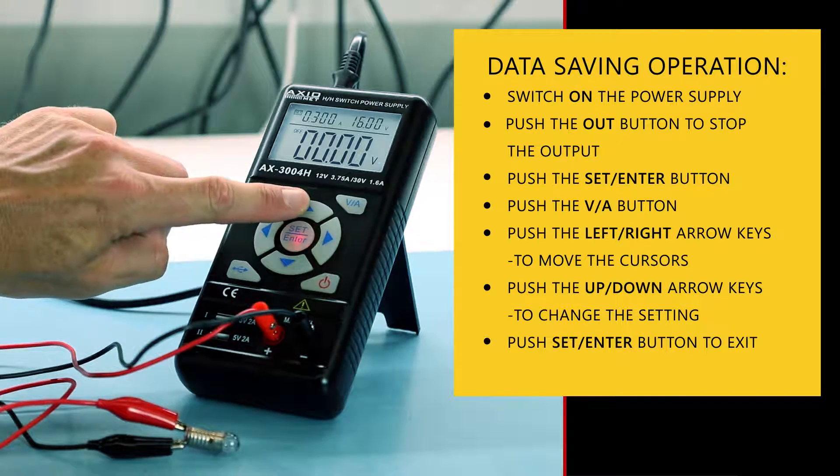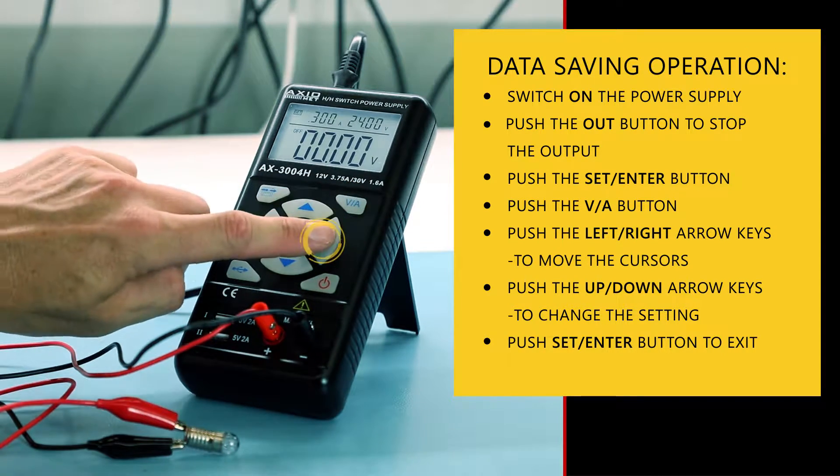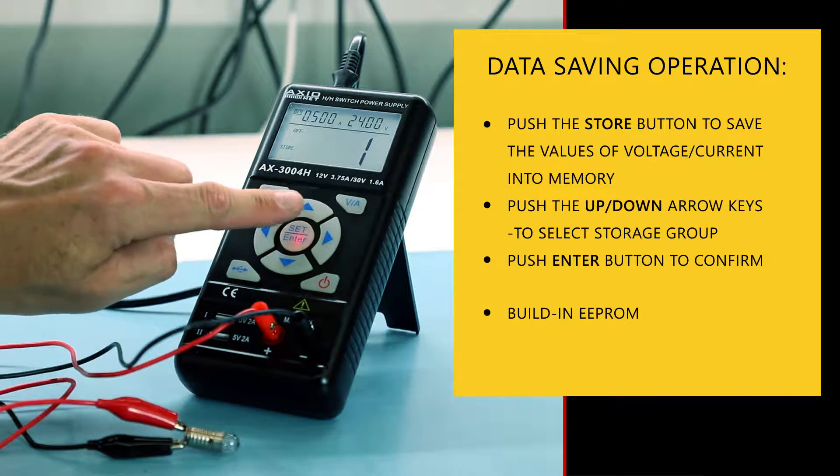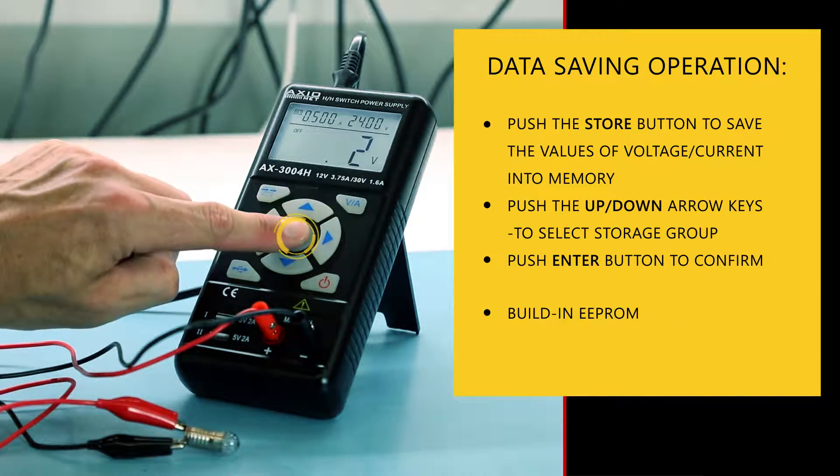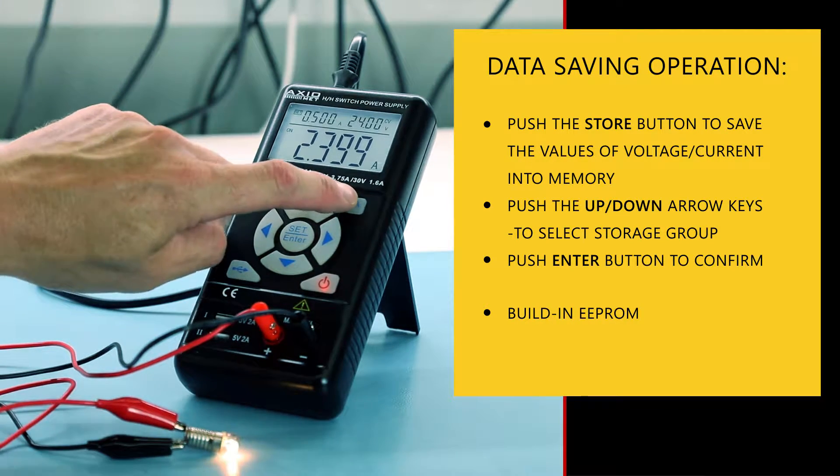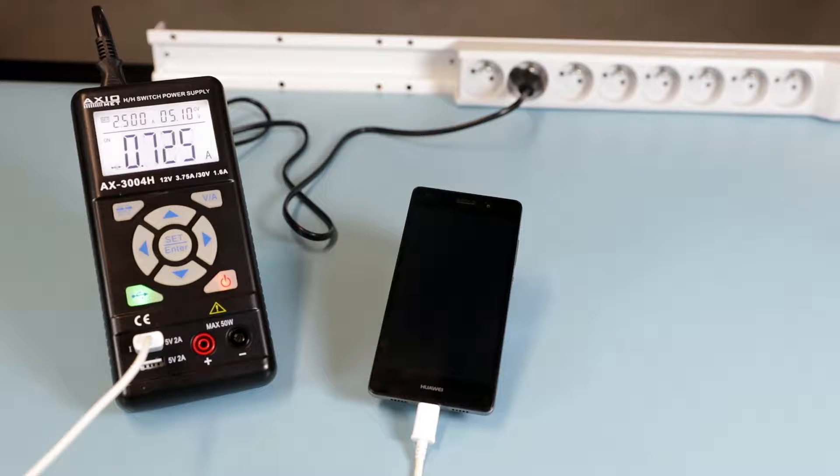The device allows you to store five predefined current and voltage values, which makes repairing devices with various parameters much easier. The same applies to starting up various devices which need several different voltages and current limits. It may also be used as a voltage source to check and adjust industrial automation systems.